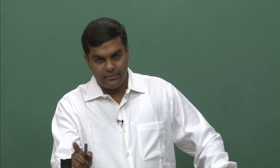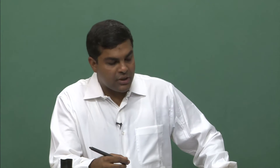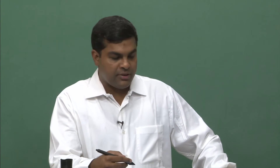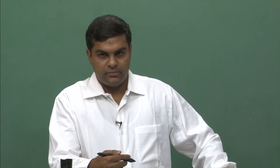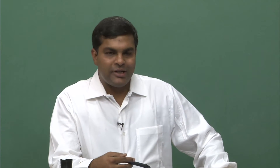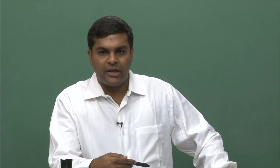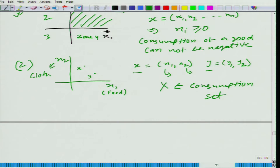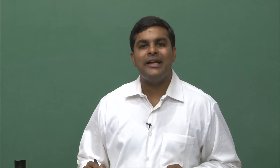The consumption set is whatever our mind can conceive. Of course, if the mind is allowed to conceive freely it would conceive more than two goods. But right now I am talking about an imaginary world with only two goods — food and cloth. So the consumption set would be the set of all bundles containing non-negative amounts of food and cloth.